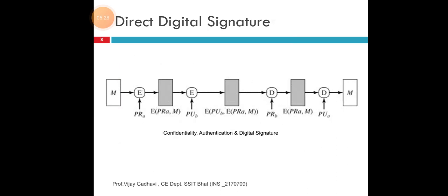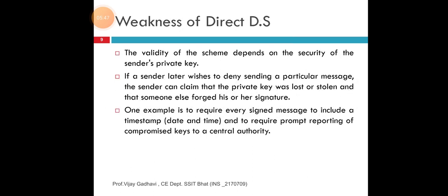This figure elaborates on confidentiality, authentication, and digital signatures, in which we mentioned the steps and mathematical calculations of various functions for encryption and decryption. The weakness of direct digital signatures: the validity of the scheme depends on the security of the sender's private key. This is a weakness or limitation.